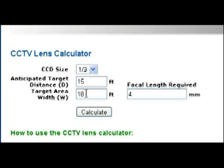You can go ahead and experiment with some of the numbers here. Let's experiment and make this 19 feet for the target area width. Click calculate. Recalculates the focal length required. Now we're down to 3.79 or around 3.8 millimeters. And let's try 18. Click calculate.